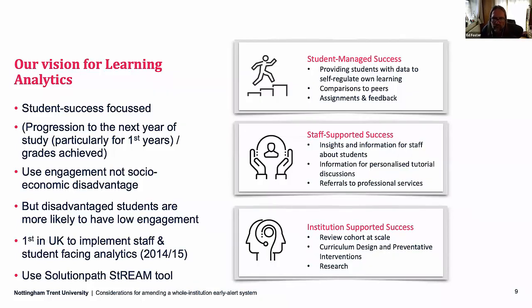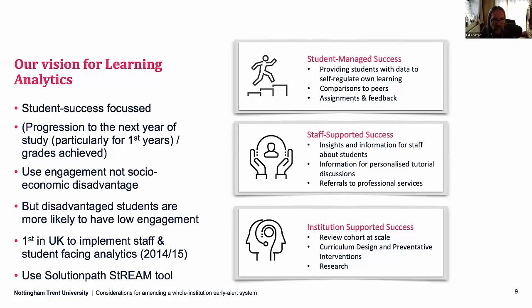Our vision for learning analytics is pretty straightforward — we're focused on student success. Our interest is how do we help students stay? The measure that we tend to use is progression from the current year to the next year. We are particularly interested in the progression of first year students, and we use as a secondary measure any grades that a student achieved. We use engagement and not socioeconomic disadvantage — we use that North American concept of engagement, the kind of time-on-task activities that students do relating to their learning outcomes. We recognise that students from disadvantaged groups are far more likely to have what we would call low engagement.